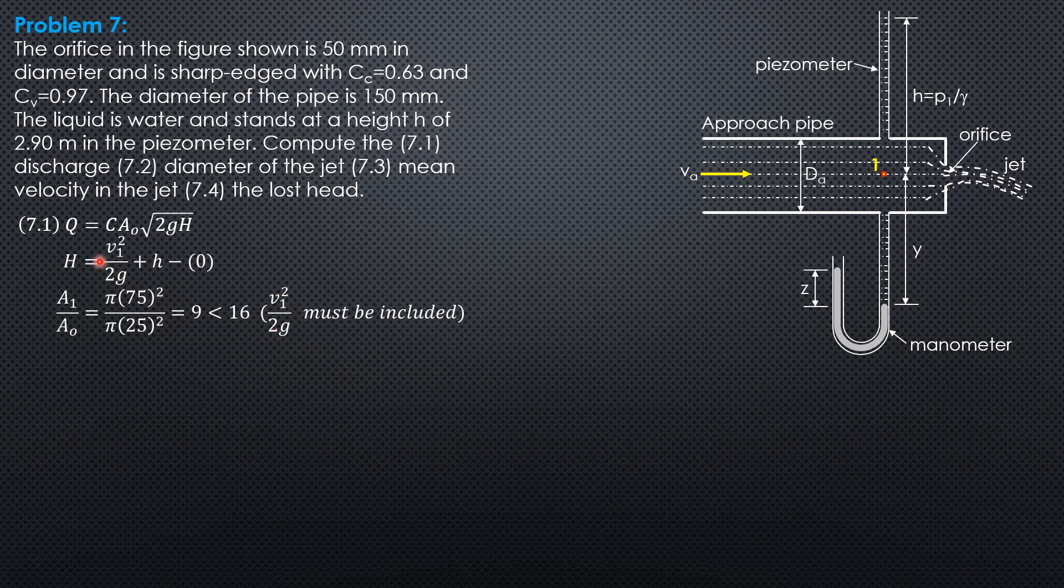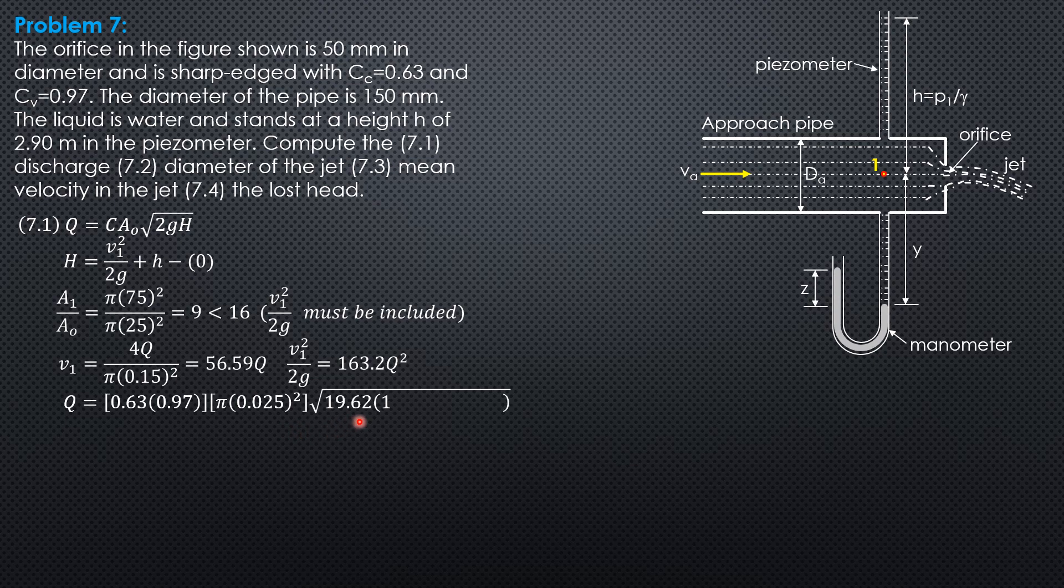This should be the head, where v₁ is 4Q over π times diameter of pipe squared, giving 56.59Q² divided by 19.62. So velocity head 1 is 163.2Q². Substituting into the formula: Q equals 0.63 times 0.97 times π(0.025)² times √(19.62 times (163.2Q² plus 2.9)).